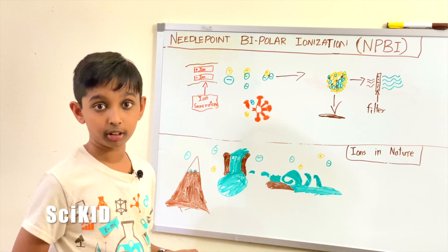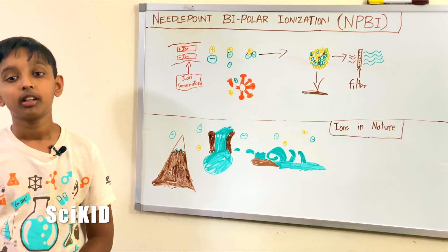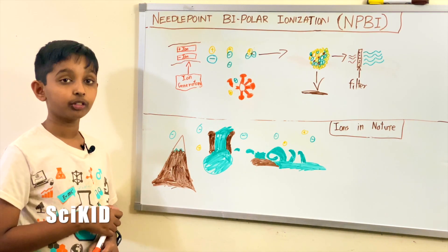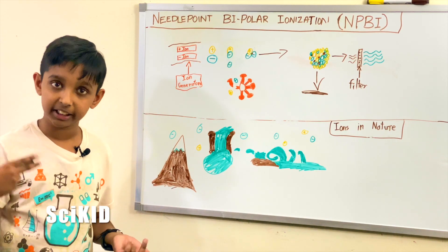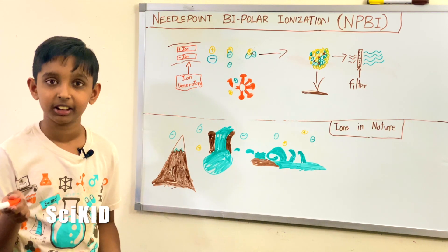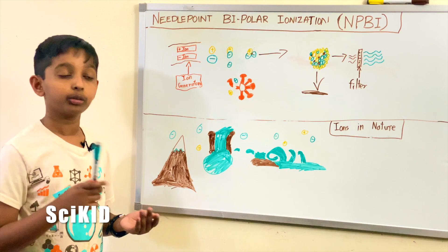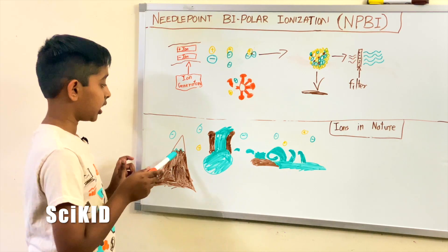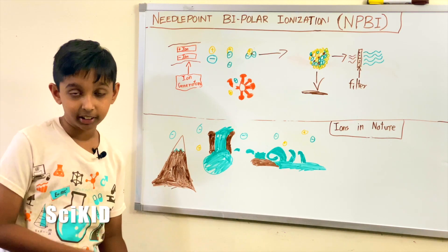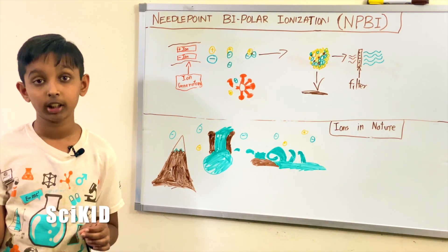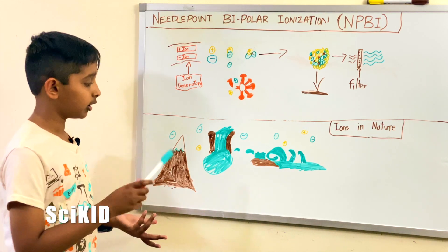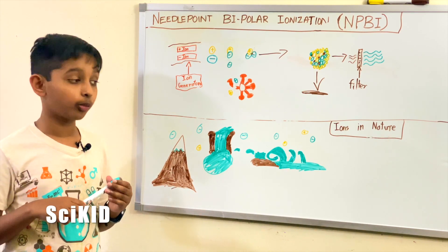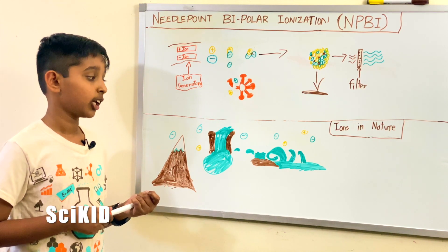Ions also exist in nature. Some places where they occur, especially negative ions in high concentrations, are mountain tops, waterfalls, and shores. The reason for the abundance of ions on mountain tops is due to cosmic rays. Cosmic rays are highly energetic particles from across the galaxy. They can get to mountains much easier than plains or lower areas since the mountains have a higher elevation. Once they smash into the mountain, the particle they directly smashed into loses an electron and the particles nearby gain electrons, making ions. In a waterfall, the water splashes hard onto wet surfaces and other bodies of water, creating ions. The same effect occurs on shores.